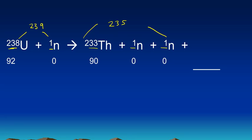So the missing number is 239 minus 235, so that's 4. And on the bottom we do the same thing. We have 92 plus 0, that adds up to 92. So the right side has to add up to 92 on the bottom as well. But we only have 90. 90 plus 0 plus 0 is 90. So the missing number is just the difference there. 92 minus 90 is 2. And so it's 4 over 2.